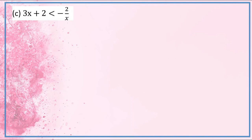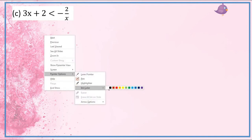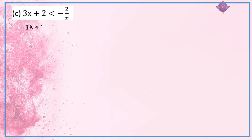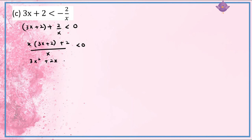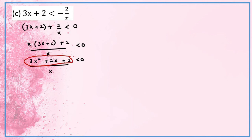Next example: 3x + 2 < −2/x. As usual, simplify first by moving everything to the left: 3x + 2 + 2/x < 0. Equate the denominator: [x(3x + 2) + 2] over x < 0. Expanding gives 3x² + 2x + 2 over x, less than zero.